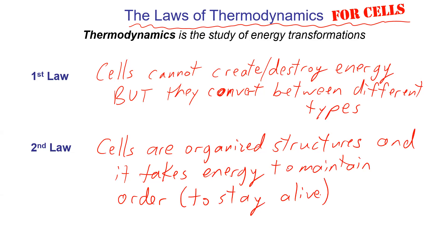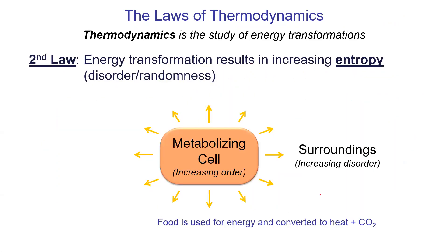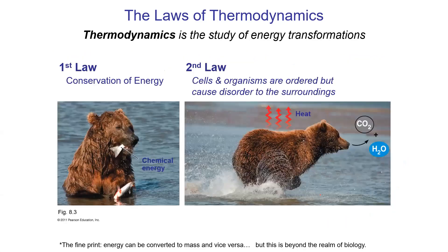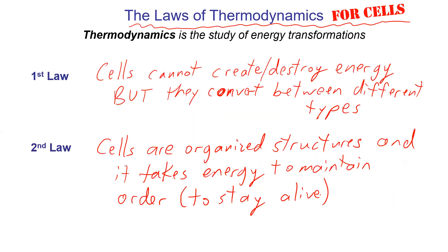Slides illustrate this: a cell gets organized at the cost of its food becoming de-organized (broken into simpler compounds). A bear eating fish exhales carbon dioxide and water — disorganized, simple compounds produced as a byproduct of staying alive. Those are the two laws of thermodynamics for cells.